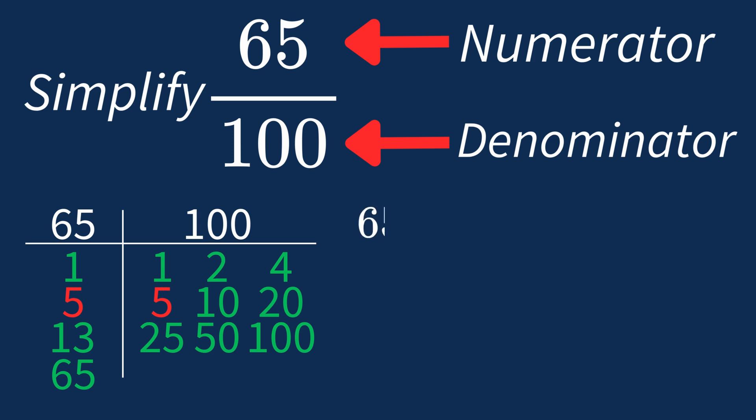Dividing the numerator, 65 by 5, gives us 13. Dividing the denominator, 100 by 5, gives us 20.